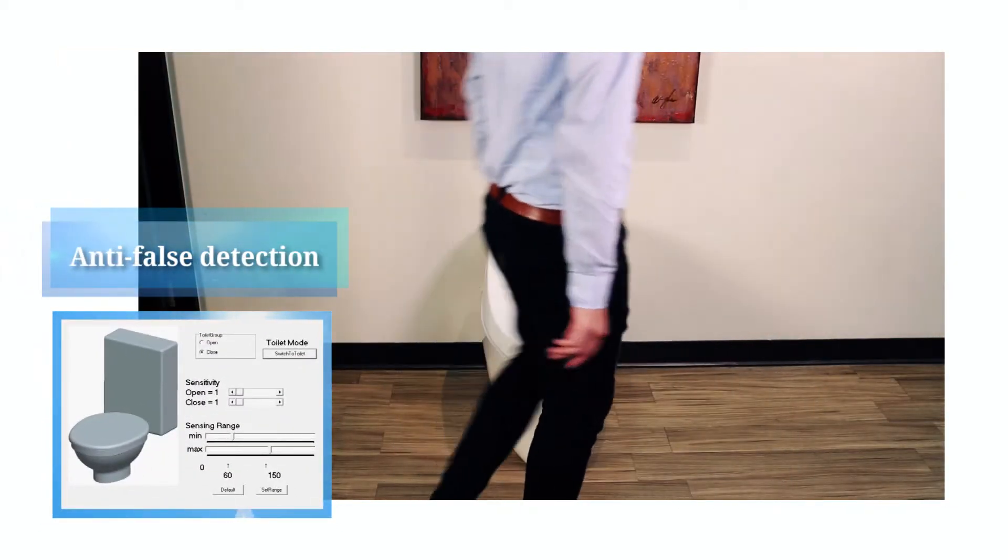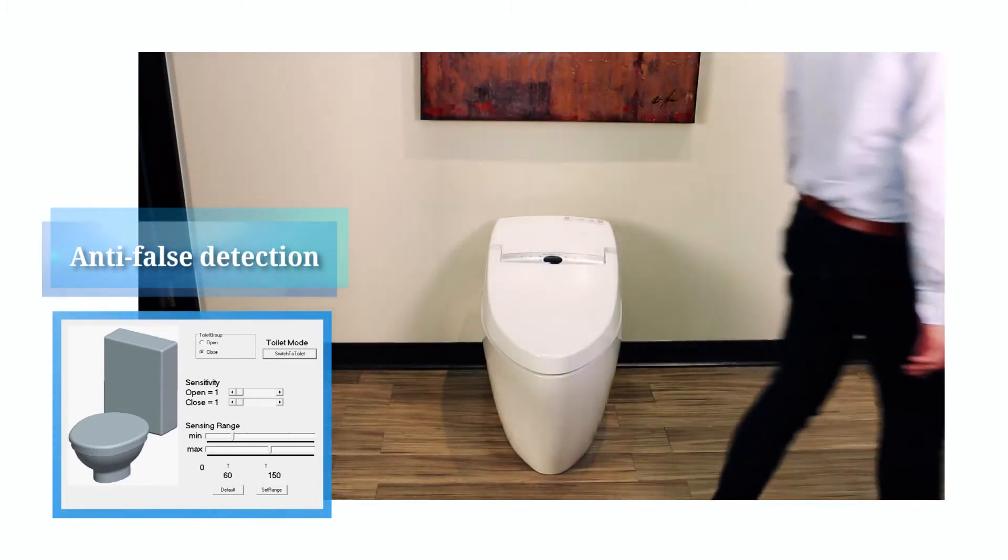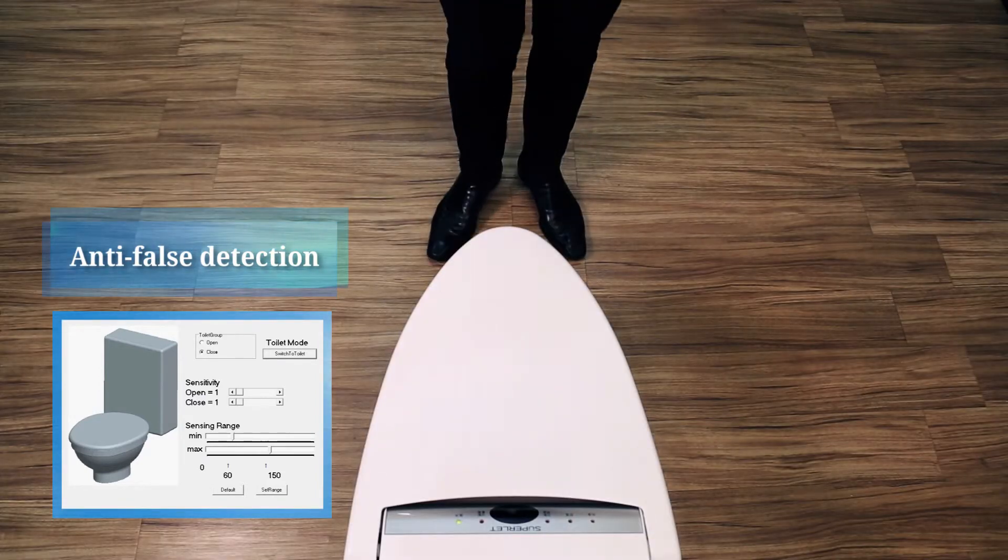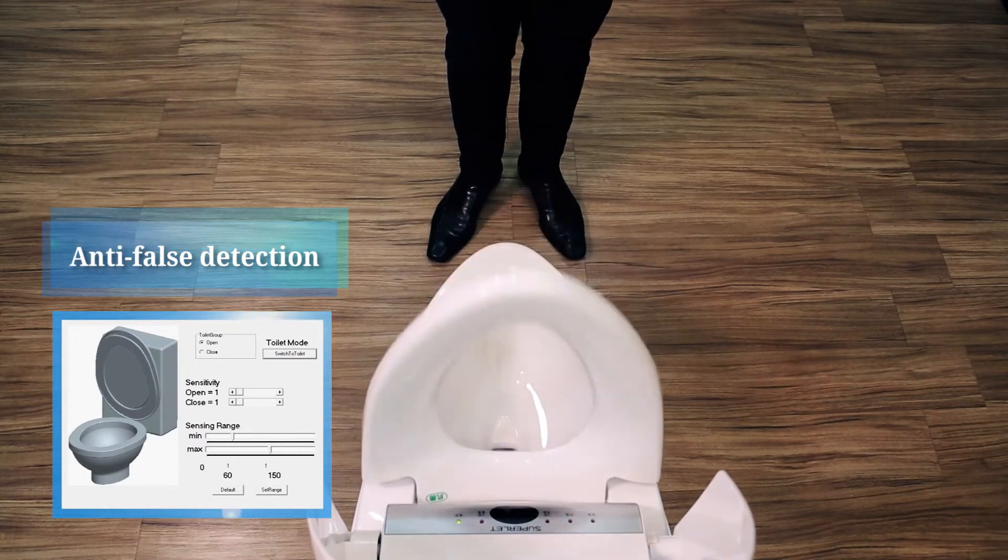When someone passes by the washlet or remains at either side of it, the lid will not be accidentally opened. The lid will only open when a user is standing in front of the washlet. It precisely detects the distance of the user, preventing the problem of accidentally opening the cover.